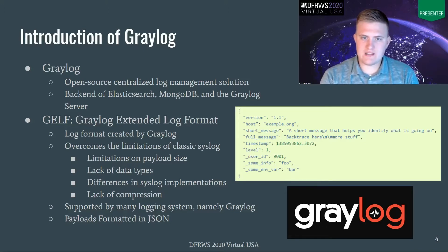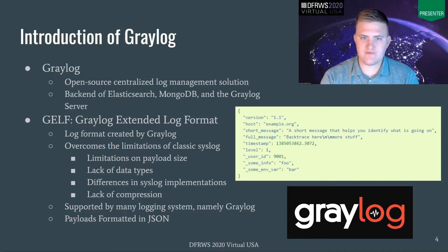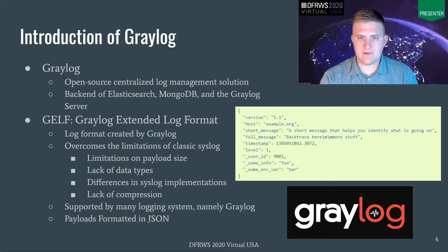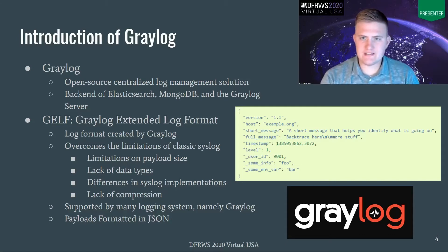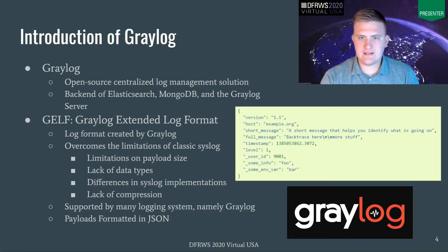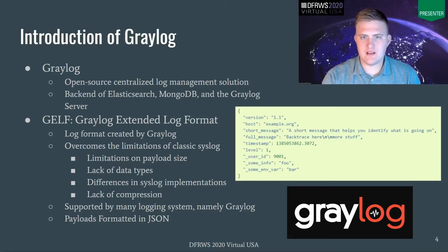In this payload, we have certain fields that are required, such as version, host, short message, full message, and timestamp. At the bottom of that payload we see different fields prepended with an underscore. This makes it very extendable, where you can add any field you want to the GELF payload and Greylog will index it.